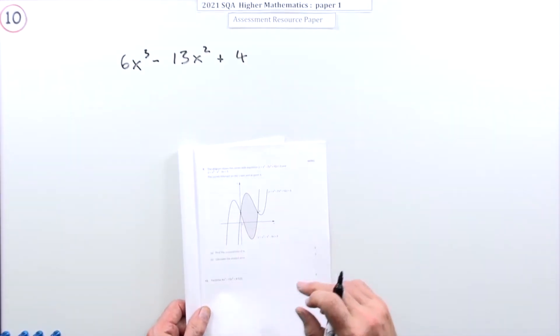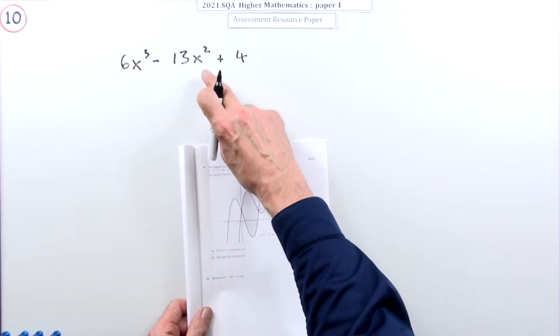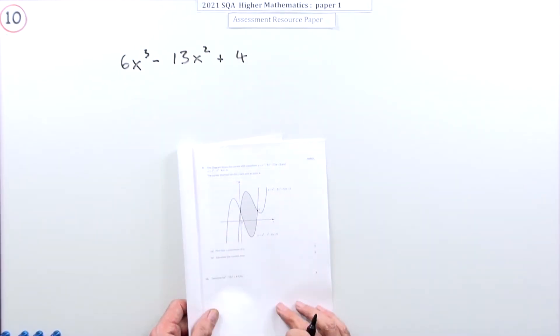Number 10 from paper one of the 2021 Higher Math resource. Four marks here for factorizing this cubic expression. Factorize it fully, that's all it says you have to do with it for the four marks.